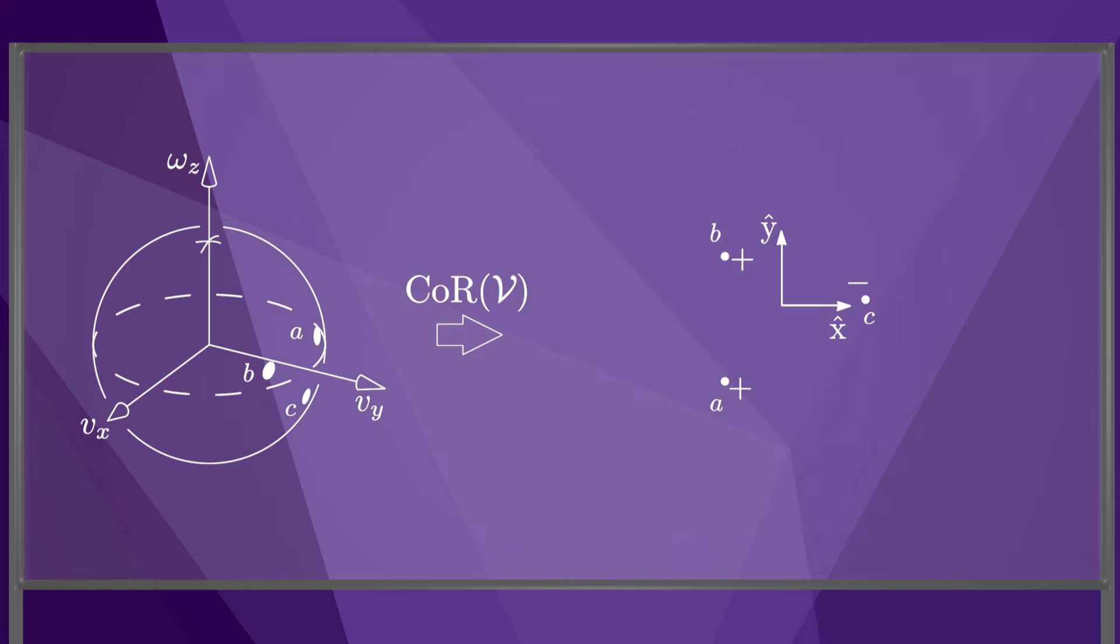As we saw in the previous video, the set of feasible twists of a body in contact with stationary constraints is a polyhedral convex cone, and it will be convenient to be able to represent such cones using rotation centers.